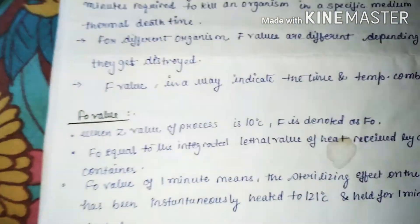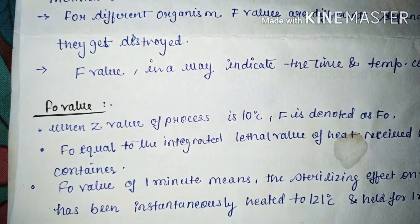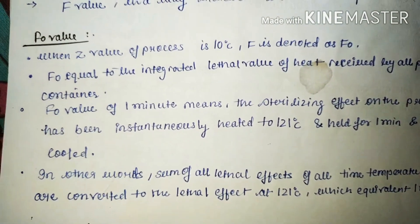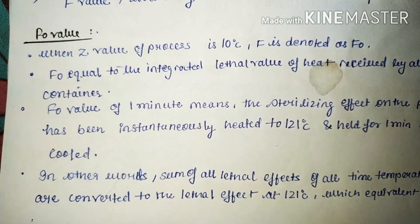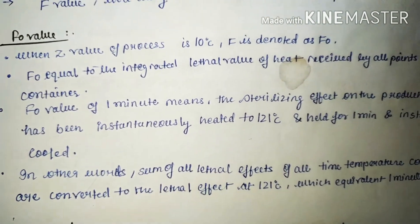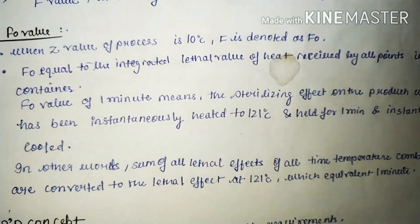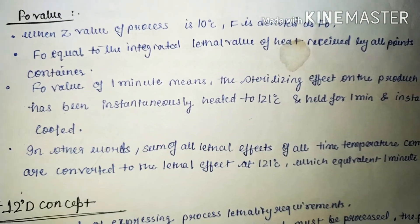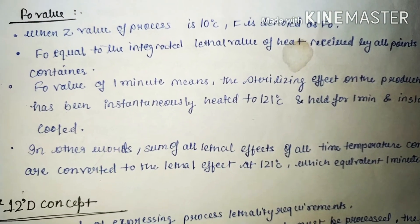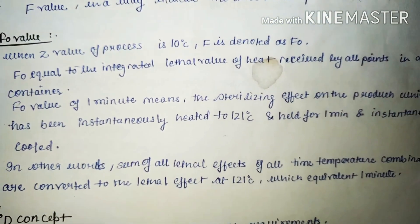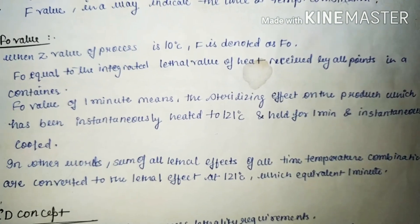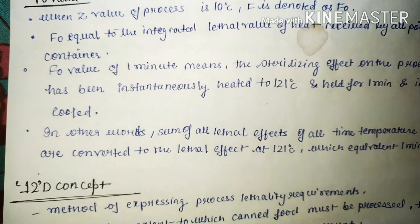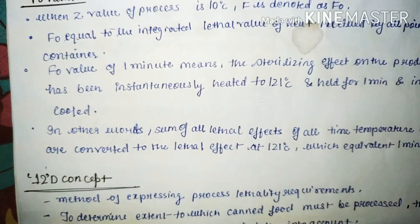What is F0 value? When the Z value of a process is 10 degrees Celsius, F is denoted as F0. F0 is equal to the integrated lethal value of heat received by all the points in a container.